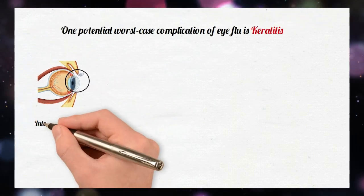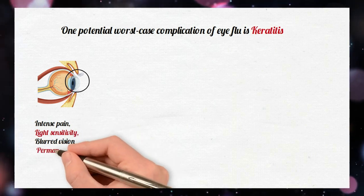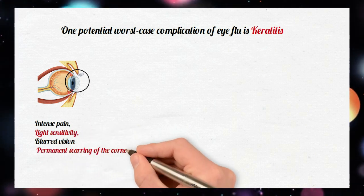Keratitis can cause intense pain, light sensitivity, blurred vision, and even permanent scarring of the cornea if not treated promptly.